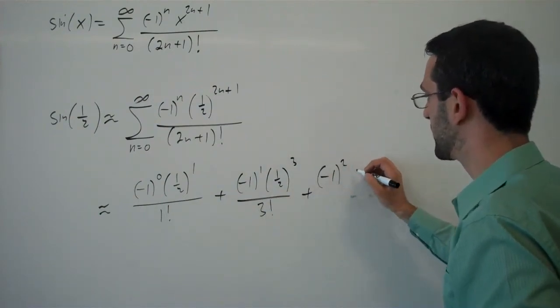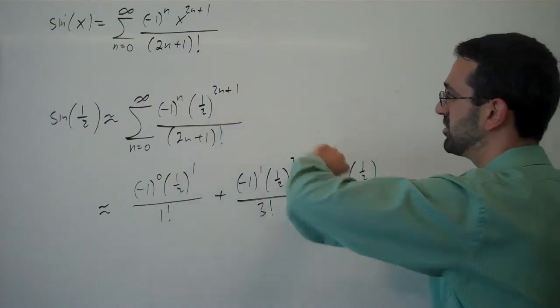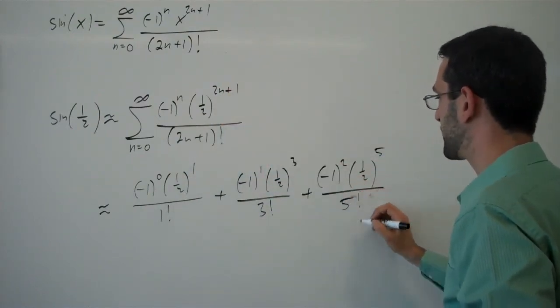Negative 1 squared times one half to the, plugging in 2 now, 5th over 5 factorial.